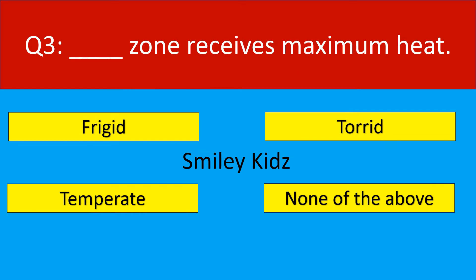Question number 3. Which zone receives maximum heat? Your options are Frigid, Torrid, Temperate, None of the above.